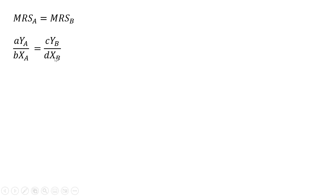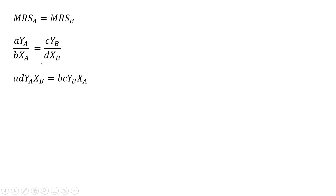I'm going to take this DXB and multiply it by the numerator on the left side, and likewise take BXA and multiply through. Multiplying through what we have in the denominators to clear them, we get this result.